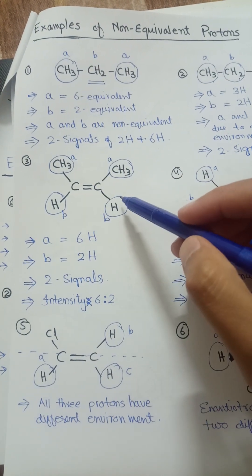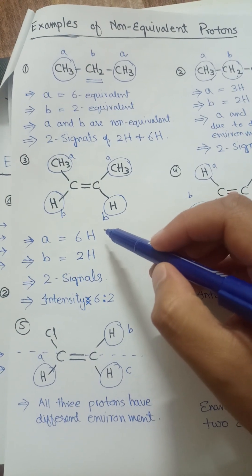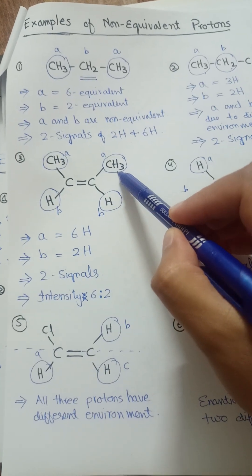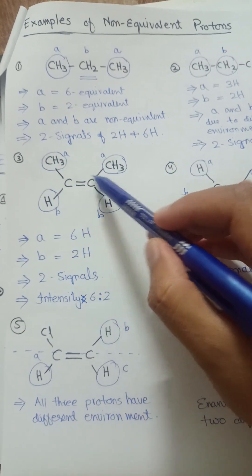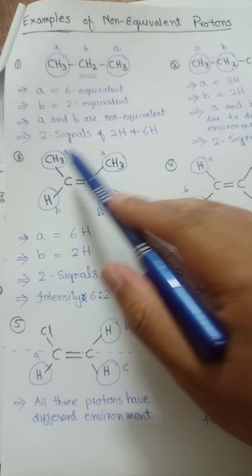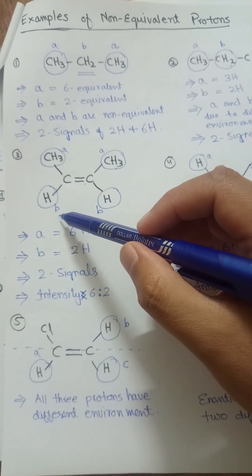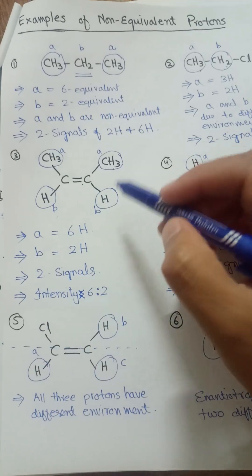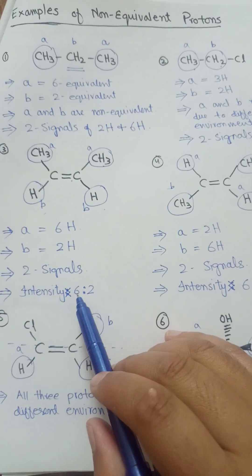Here is the third example, which is cis-2-butene. In this case, the methyl group containing three protons on one side and three protons on the other are both on the same side of the double bond, so they are in the same environment. The two vinyl protons are also in the same environment. So the six methyl protons give one signal and the two vinyl protons produce another signal, with an intensity ratio of six to two.